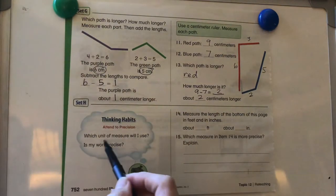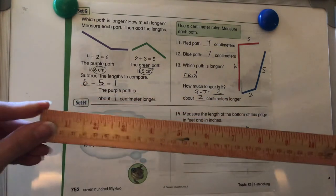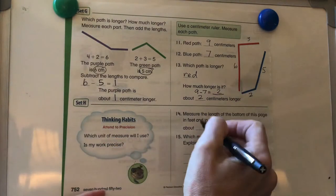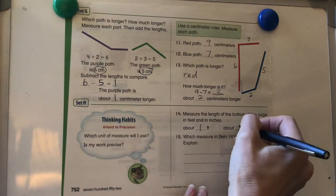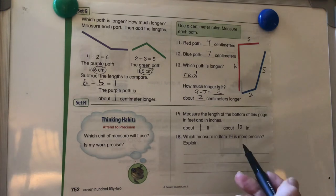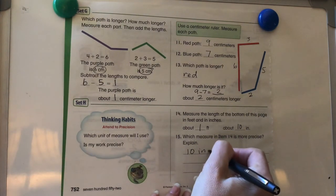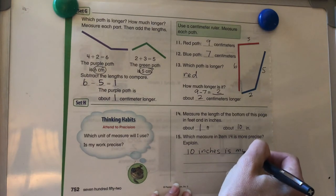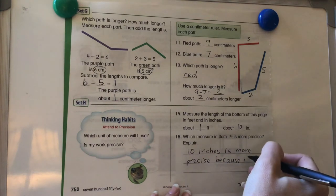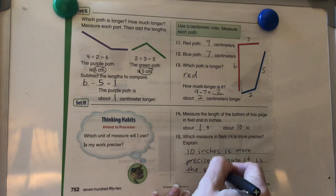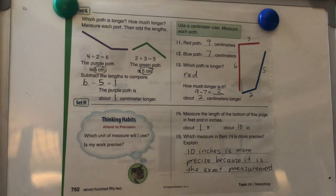So here's our last question. Thinking habits. Attend to precision. Which unit of measure will I use? Is my work precise? Measure the length of the bottom of this page in feet and inches. So I'm going to take my ruler. It is about one foot. And in inches, it is about, let's see, 10 inches. It's about 10 inches. So which measure in item 14 is more precise? One foot or 10? Well, it's not even a foot. So we know the inches is going to be more precise. And we can say 10 inches is more precise because it is the exact measurement. So it's the exact measurement. And again, pause the video as needed.